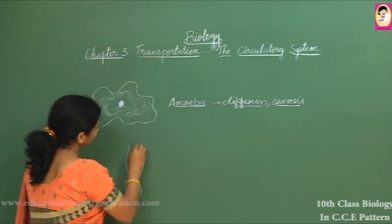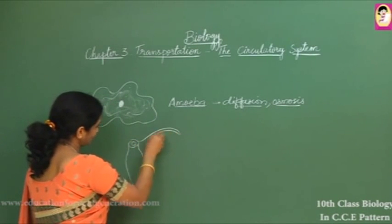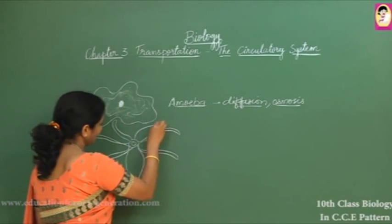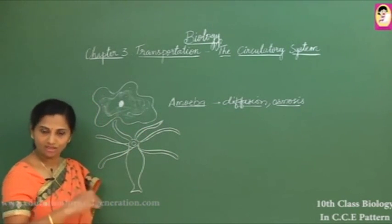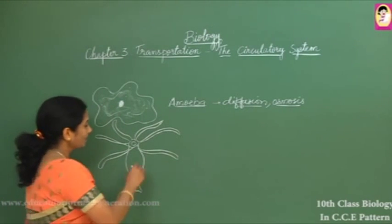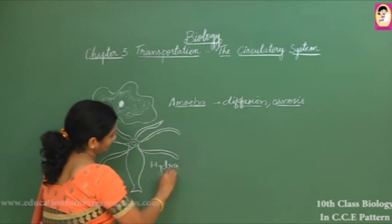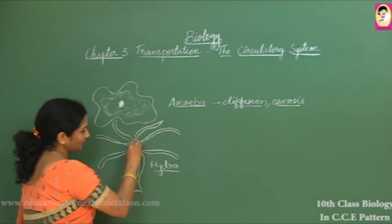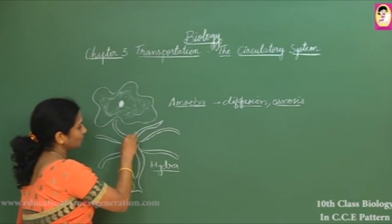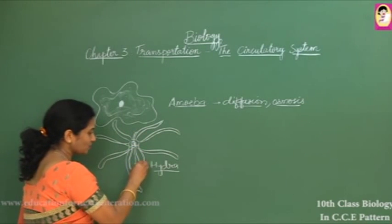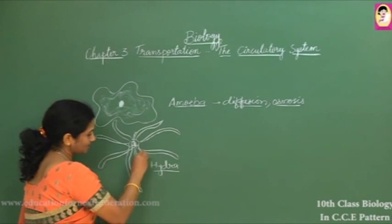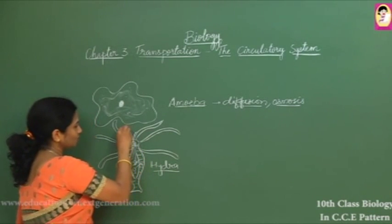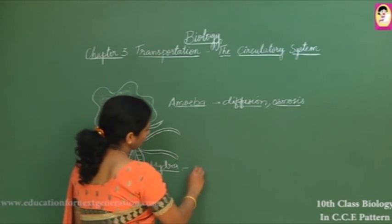For aquatic plants like hydrilla, or multicellular organisms like hydra, diffusion is the mechanism through which exchange of gases takes place. Hydra has only one opening — the oral cavity — through which substances dissolved in water can enter via water currents. Oxygen diffuses into the cells and carbon dioxide diffuses back out. So for hydra too, diffusion and osmosis are sufficient for transportation.